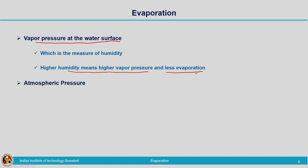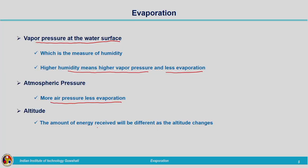Next is atmospheric pressure — the pressure exerted by the air. More air pressure means less evaporation. Next is altitude: as altitude increases, temperature decreases and pressure also decreases. Temperature is the main reason behind evaporation, so at higher altitudes temperature is lower, meaning the amount of energy received changes. Based on prevailing temperature and pressure conditions, the rate of evaporation will vary with altitude.